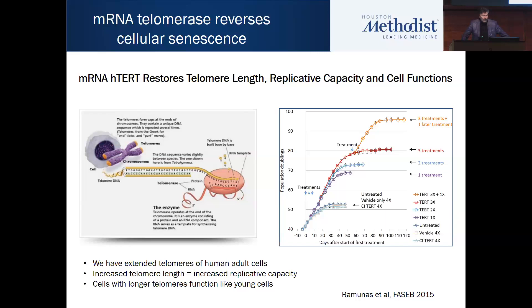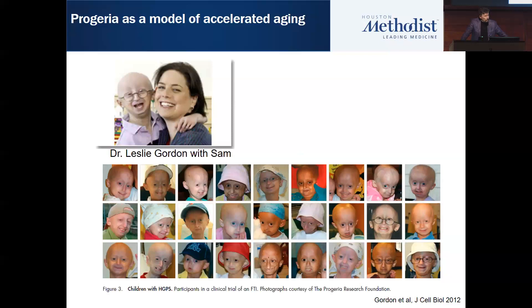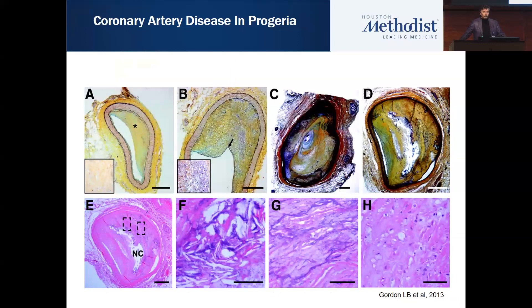The effect of telomerase goes beyond replicative capacity — it reverses many of the hallmarks of aging. We have cells from children with Hutchinson-Gilford progeria syndrome, which causes accelerated aging. They lose baby fat, develop alopecia, and have stunted growth. They succumb at ages 13–15, most commonly to coronary artery disease, though some succumb to stroke. In any event, they have arterial occlusive disease that leads to their demise.